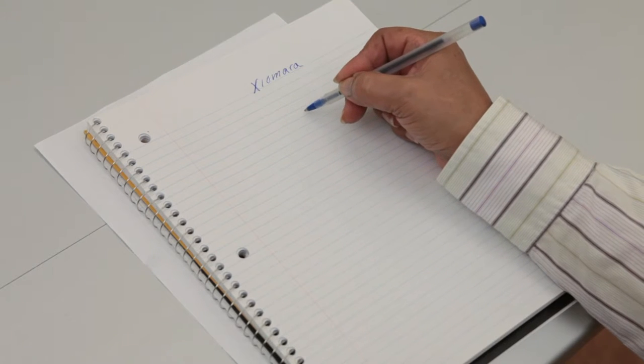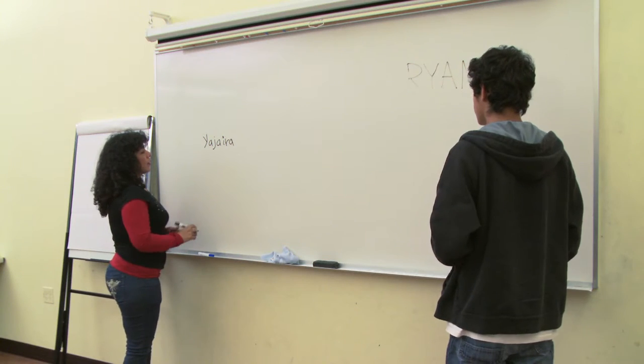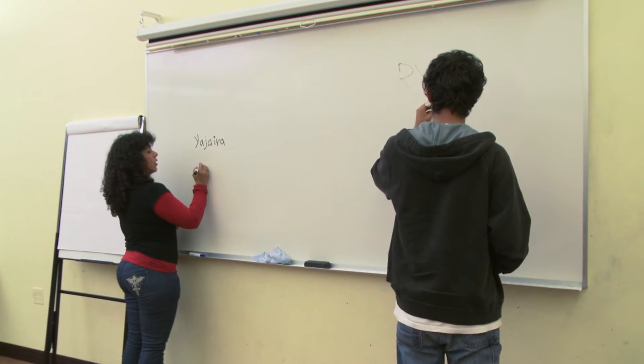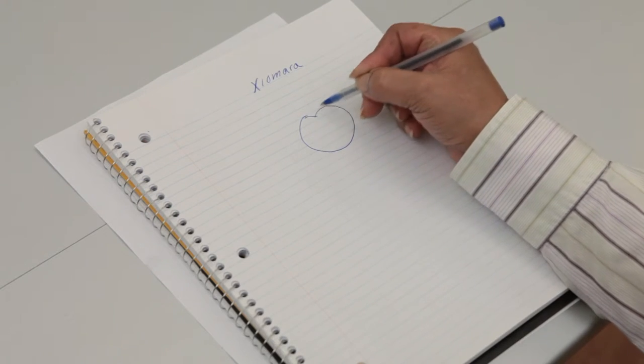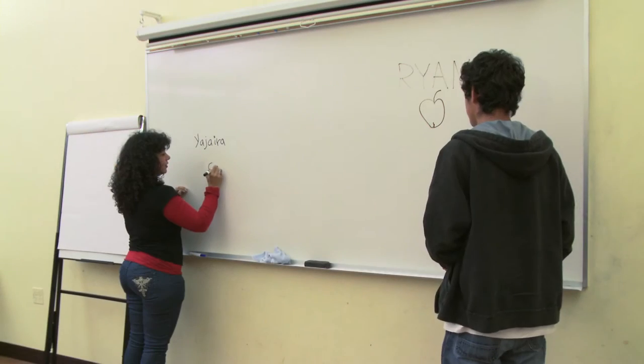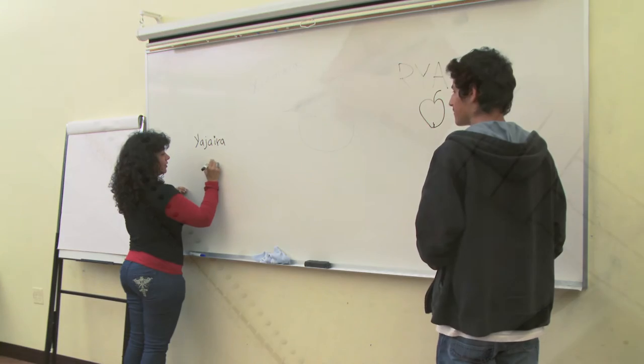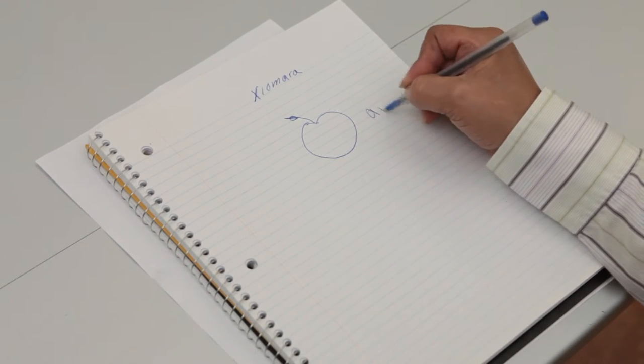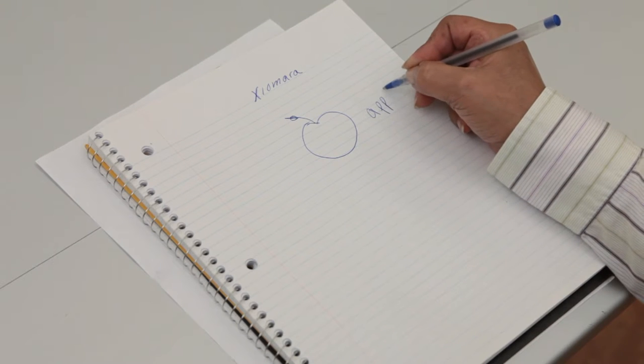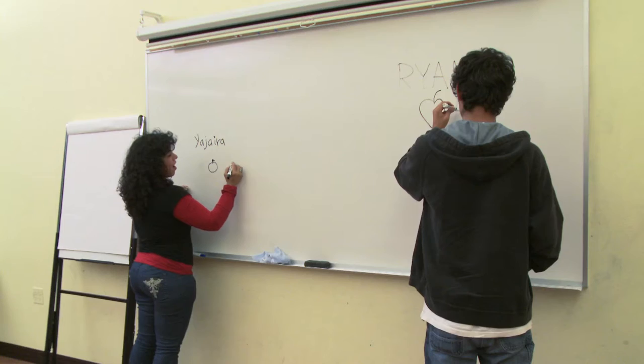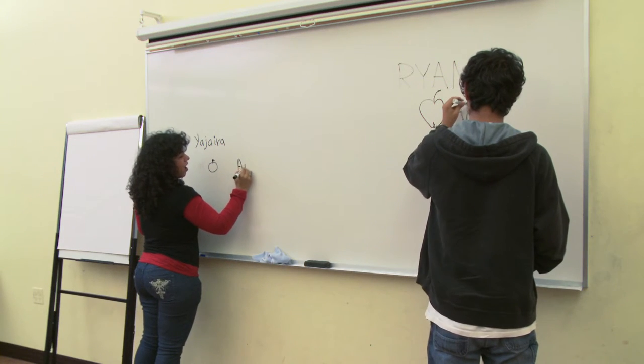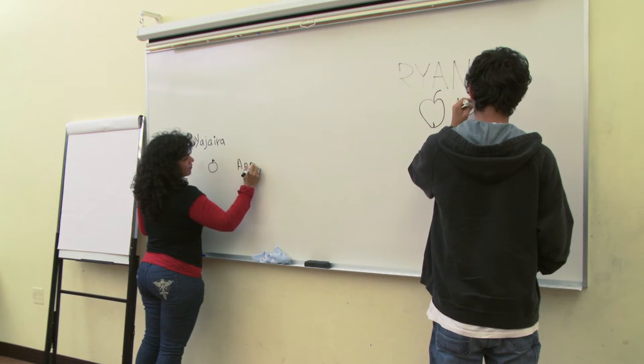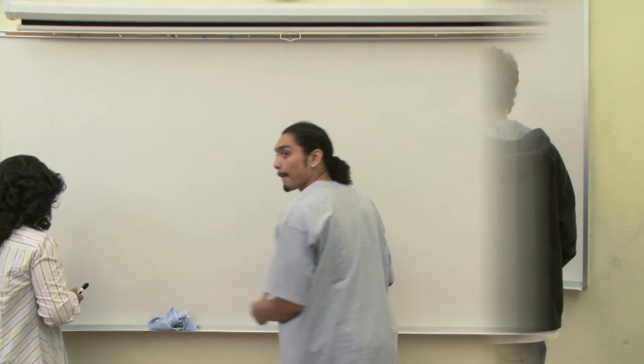Now draw an apple. Apple. Very good. And write the word apple. I'll spell it for you. A-P-P-L-E. Very good. Okay.